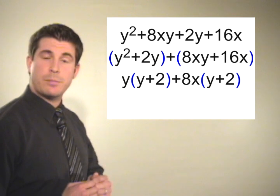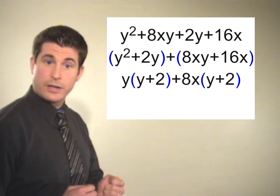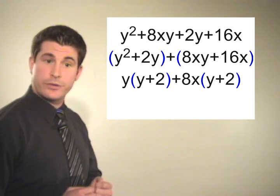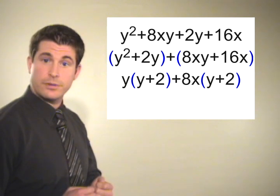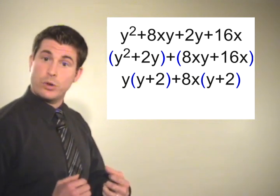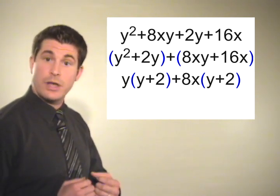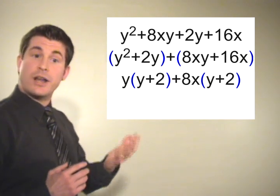And so to wrap this problem up, you're going to do step 3, which is using the distributive law to rewrite the expression. So because both groups have a y plus 2 term, we can take that term and write it on the outside.